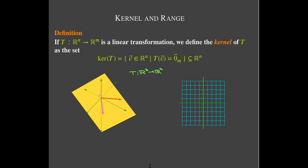Let's start by talking about the kernel of a linear transformation T. The kernel is the set of inputs whose images are the zero vector, or the set of inputs that get mapped onto the zero vector by T.